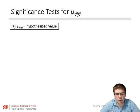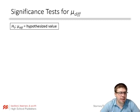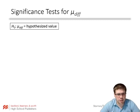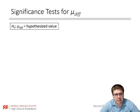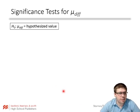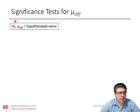Hey AP Statistics, welcome to the second part of 10.3 where we're going to look at the significance test for mu diff. We're dealing with matched pairs data, and effectively this is just a one-sample t-test with differences, so we can get through this pretty quickly.